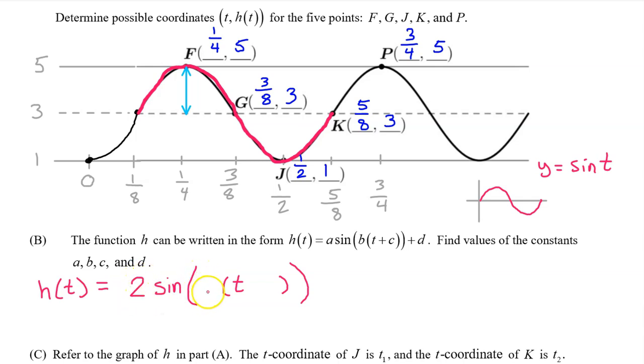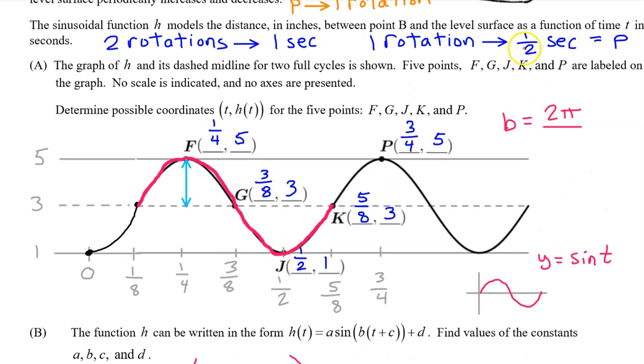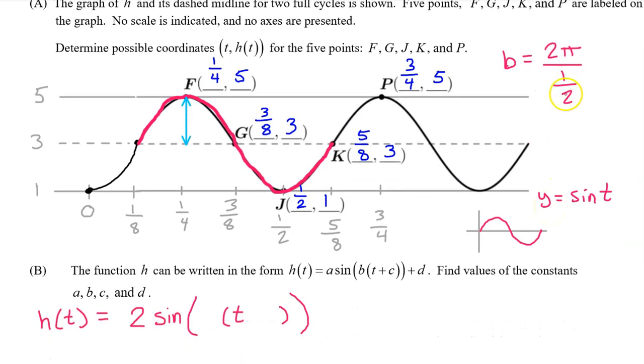Now it's time to find the b value. But in order to find the b value, we will need to use the period. The b value is given by two pi divided by the period. In part A, we found that the period was one half of a second. So the b value will be two pi divided by one half. When you divide by a fraction, you multiply by the reciprocal. So b will equal two pi times two. Therefore, b will equal four pi.